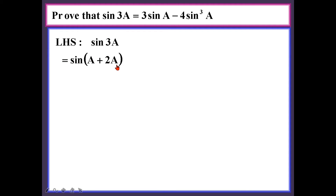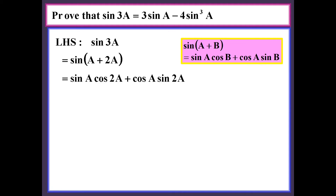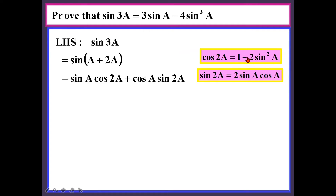sin(a + 2a) gives me: sin a · cos 2a + cos a · sin 2a, following the compound angle formula. Once that is done, I have to think about how to simplify further — other formulas will come in. I use cos 2a = 1 minus sin² a (choosing the form with sin since the right-hand side has only sin), and for sin 2a I use 2 sin a · cos a.